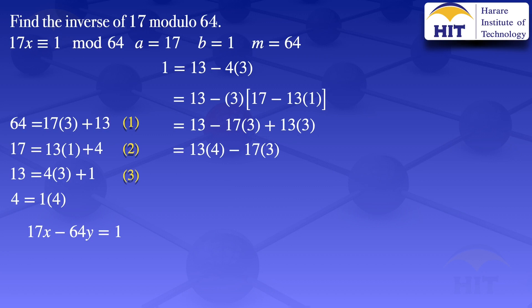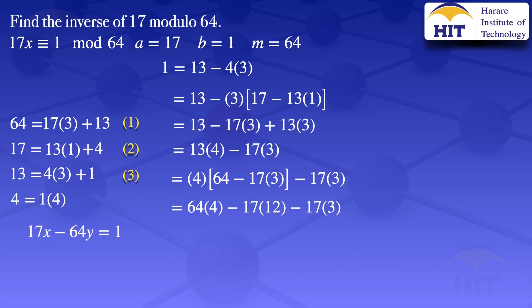From equation number 1, 13 equals 64 minus 17 times 3. Substituting into the equation above, where we have 13 we put 64 minus 17 times 3, giving us 4 times (64 minus 17 times 3) minus 17 times 3. Multiplying through by 4, we have 64 times 4 minus 17 times 12 minus 17 times 3. Combining those terms, 12 seventeens plus 3 seventeens gives us 15 seventeens. So this simplifies to 64 times 4 minus 17 times 15.